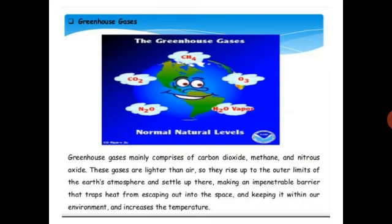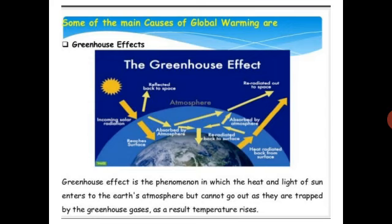When there is a layer outside Earth's surface, it covers all the radiation coming from sunlight and does not allow it to go back outside the Earth, which is the main cause of increasing temperature. The greenhouse effect is the phenomenon in which heat and light from the sun enter the atmosphere but cannot go out, as they are trapped by greenhouse gases, causing temperature to rise.